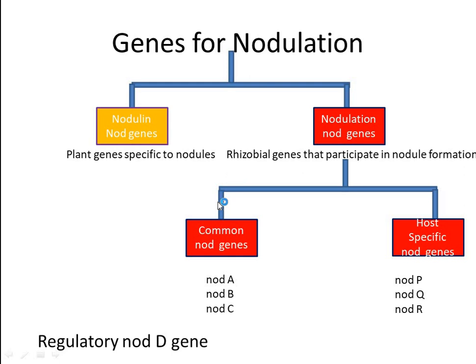Plant genes specific to nodules are called nodulin genes, represented by capital NOD. Rhizobial genes that participate in nodule formation are called nodulation genes, represented by small nod. These rhizobial nod genes are classified as common nod genes or host-specific nod genes. The common nod genes include nodA, nodD, and nodC, whereas the host-specific nod genes include nodP, nodQ, nodH, nodE, and nodL, which differ among rhizobial species and determine host range.